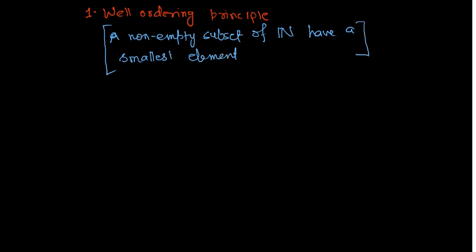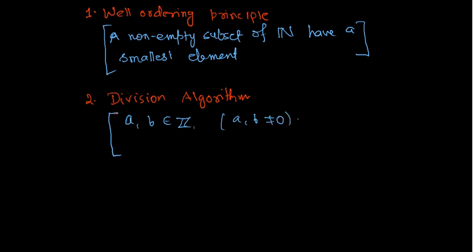This statement looks like trivial but it's very important in number theory. And the second is division algorithm. So this tells that if a and b are two integers, both are non-zero, there exist unique q and r in Z such that a equals b*q plus r, where r is greater than or equal to zero and less than b.